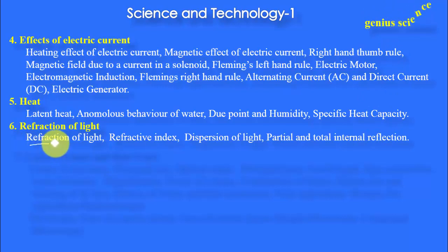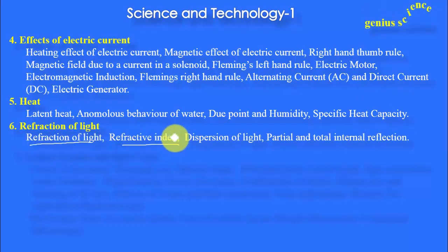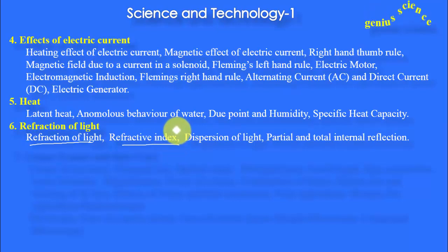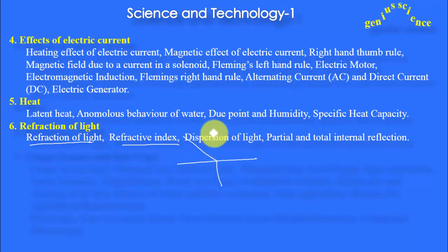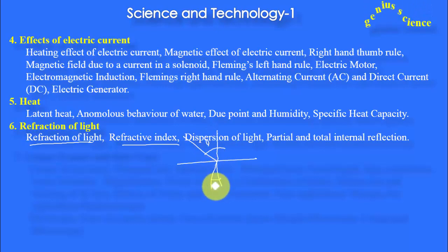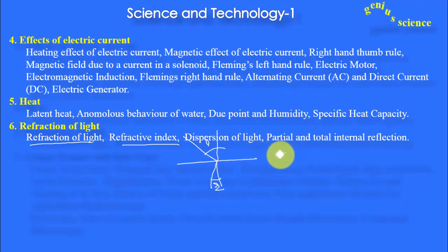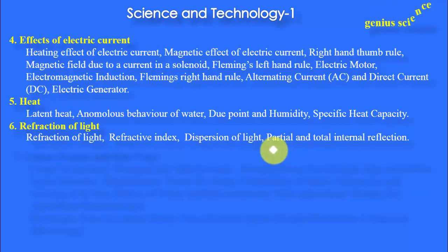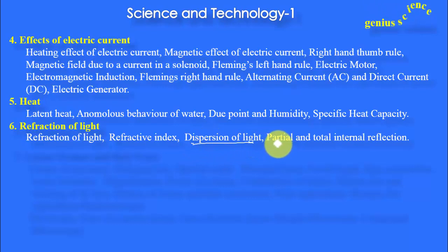In the Refraction of Light chapter, refractive index — what is the refractive index? It is the ratio of sin i by sin r, where i is the angle of incidence and r is the angle of refraction. The ratio of these two terms — sin i by sin r — is the refractive index. We must remember this. Then dispersion of light, partial and total internal reflection.